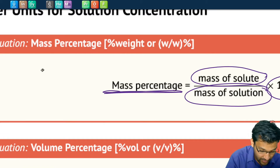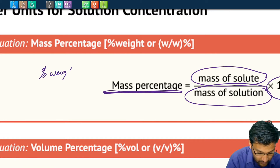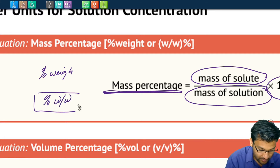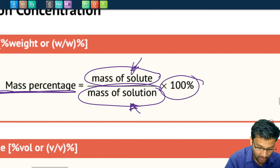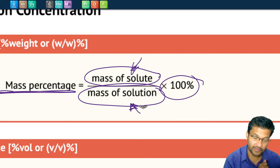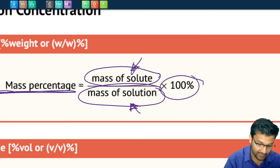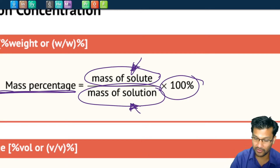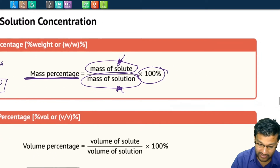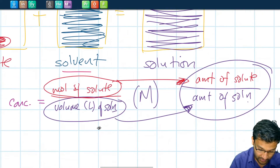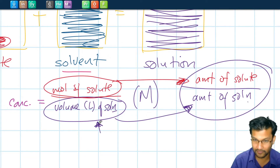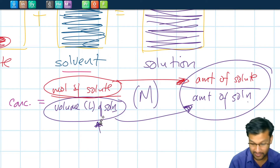Those two things together, multiplied by 100%, give what we call the concentration by mass percentage. Sometimes you'll see this written as percent weight or percent W over W — it means percent weight over weight. It's the weight of the solute divided by the weight of the solution. We're not using moles of solute and liters of solution, but mass of solute and mass of solution. For example, if your solution is a solid, volume might not make as much sense as mass.